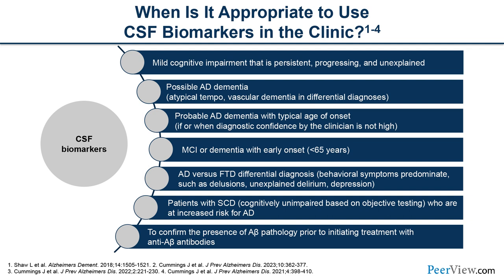CSF biomarkers are appropriate in the clinic for persistent, progressing, or unexplained MCI; possible or probable AD with atypical presentation or mixed etiology; when the clinician's diagnostic confidence is not high; early-onset cognitive impairment under age 65; differential diagnosis such as Alzheimer's versus frontotemporal degeneration (which does not show amyloid changes); patients with subjective cognitive impairment at increased risk; and to confirm amyloid pathology prior to initiating anti-amyloid DMT.